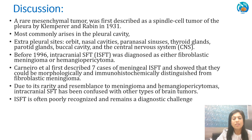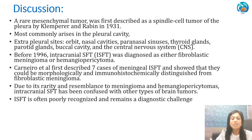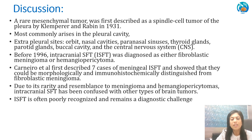This is a rare mesenchymal tumour. It was first described as a spindle cell tumour of the pleura by Klemperer and Rabin in 1931. Most commonly it arises in the pleural cavity; however, other sites include the orbit, nasal cavities, paranasal sinuses, and more. In the CNS it is rare. Until 1996, it was diagnosed either as fibroblastic meningioma or hemangiopericytoma. Later, Carneiro and his group described seven cases of meningeal intracranial solitary fibrous tumour and showed they are morphologically and immunohistochemically distinct from fibroblastic meningioma. Intracranial SFTs are poorly recognised tumours and remain a diagnostic challenge.